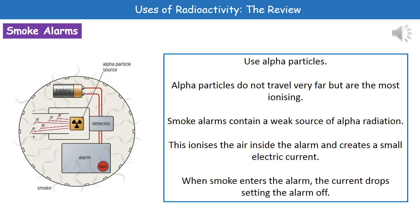That weak source of alpha radiation will be releasing alpha particles. As those alpha particles come into contact with the particles in the air, they will become ionized. That means we're going to have a small current flowing through the circuit, as you can see in the diagram. As long as that current is flowing, the alarm is quiet. If, however, we've got smoke from a fire, the smoke will actually block the alpha particles and stop them ionizing the air. As soon as the air is no longer ionized, we're going to see a drop in the current in the circuit, and the alarm goes off. It's all down to the fact that our alpha particles are not penetrating that this actually works.